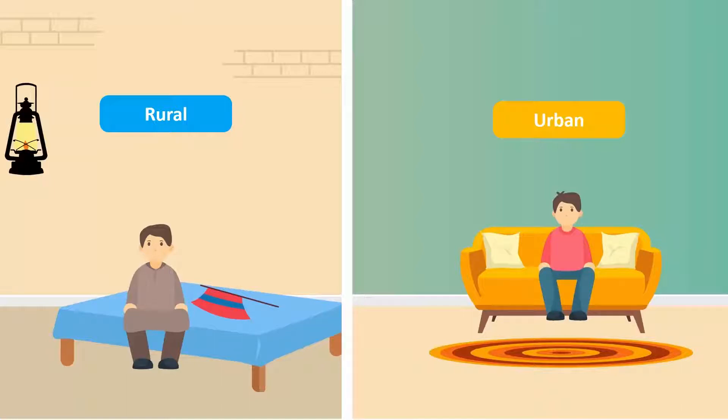On the other hand, in urban areas, people have facilities such as fans, air conditioners and lights in their homes because of the availability of electricity. Energy is being used in both cases, but the use of electrical energy makes a huge difference because it is more efficient.